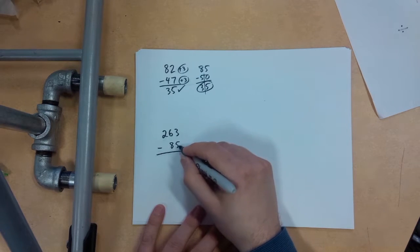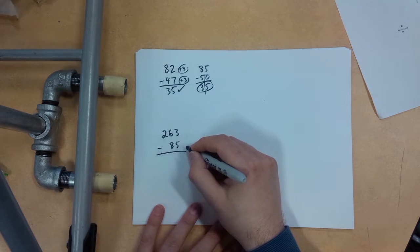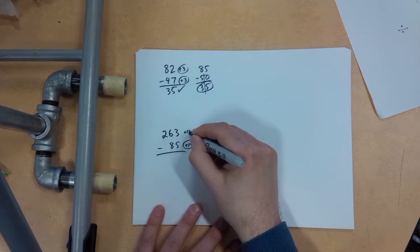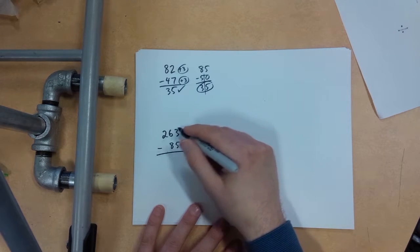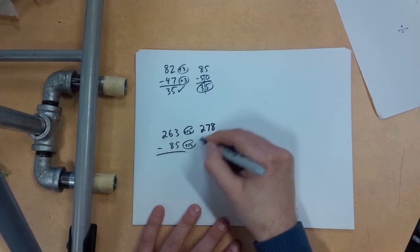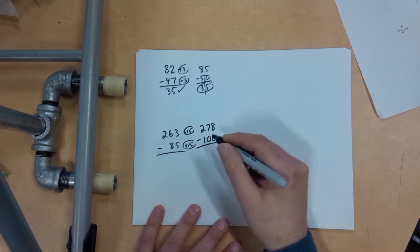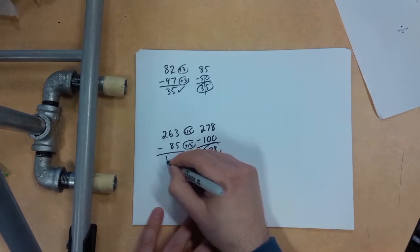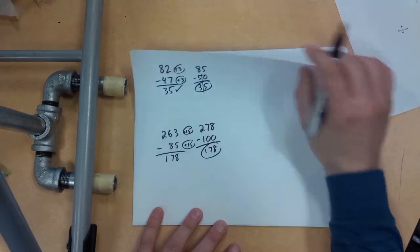Now what easier number can I think of here? I'm thinking of maybe 100. If I bump both of these up by 15 to get 100, then I know that I've got 278, take away 100. How easy is that? 178. Just like that, 178. It's really that easy.